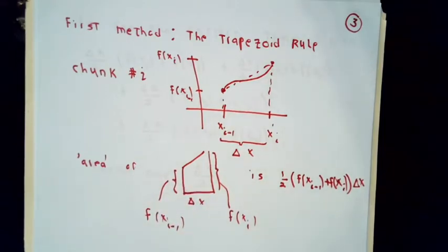We know how to calculate the area of a shape like that from geometry. It's one half times the height at one side plus the height at the second side times the length of the base. So the contribution to my integral that comes from chunk number i is just going to be this amount.